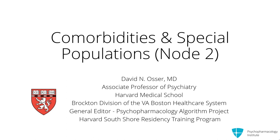Now we turn to node 2 of the algorithm, where we evaluate for comorbidity and other special patient populations and explain how there will be differences in the algorithm we're about to show you if they have these different circumstances and comorbidities.